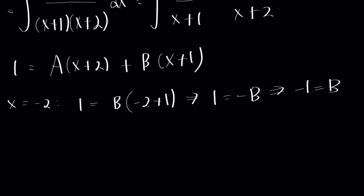And now if x equals negative 1, the b term will cancel. And we have 1 equals a times negative 1 plus 2. Negative 1 plus 2 is positive 1 times a. So a equals 1. And we solved for the values of a and b.